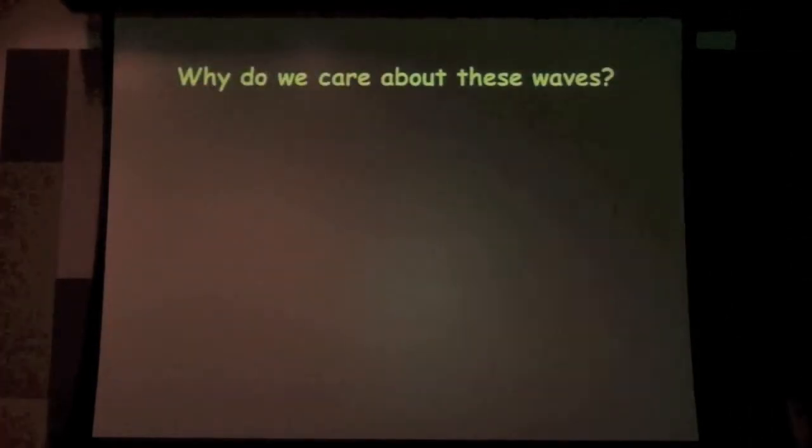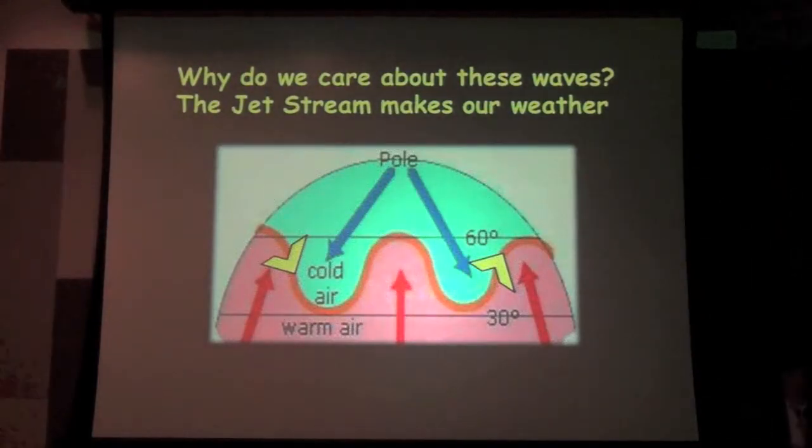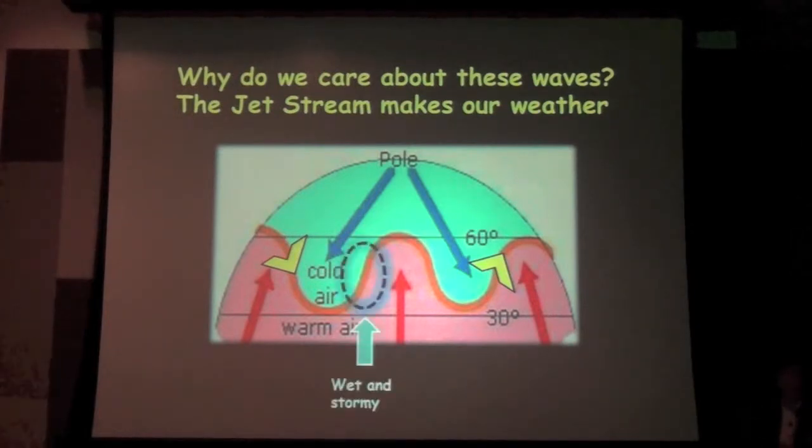So why do we care about that? It turns out those waves have everything to do with the weather that we experience here on the surface. Here's a schematic of one of those waves in the jet stream. Here's the jet stream following this orange line blowing from basically west to east. You can see that it separates the cold air to the north from the warm air to the south. Those waves in the jet stream create the weather patterns that we experience down here on the surface. When this part of the wave in the jet stream, when the winds are out of the southwest over your head, if Detroit were right here, you'd be in a very wet and stormy pattern because that part of the jet stream creates lifting motion in the atmosphere and it creates clouds and precipitation.